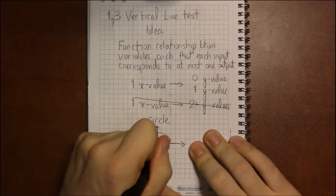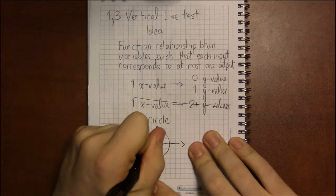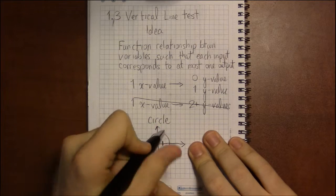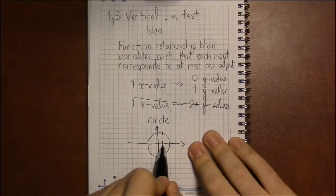Well, let's just pick an x value at random. Let's look at this, whatever x value this happens to be. There's a y value here corresponding to this x value.